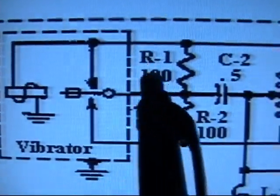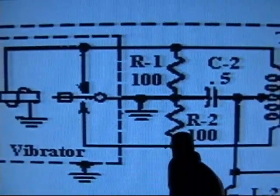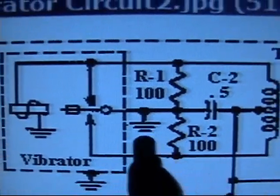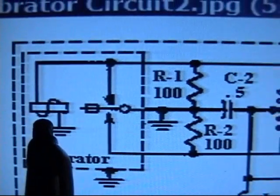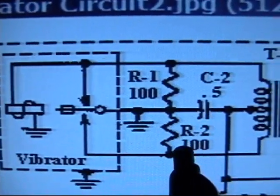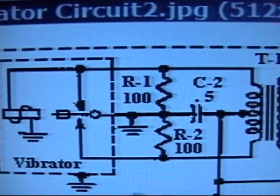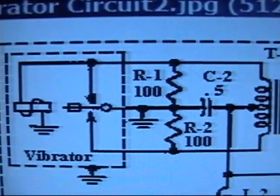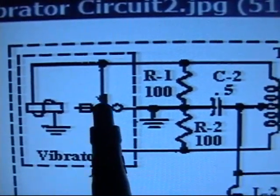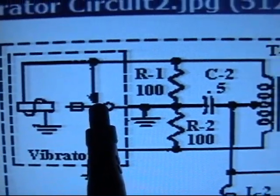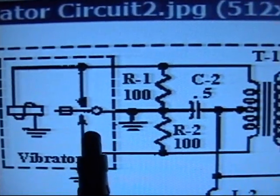Closer inspection here, you have two resistors, in this case 100 ohms, that are across the contacts of the vibrator. And these also help suppress a lot of the sparking and so forth that occurs as the contacts break away. The make and break—well, the break is the part that hurts these contacts.